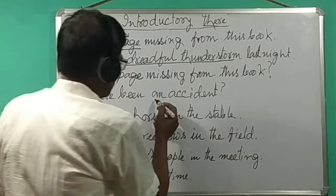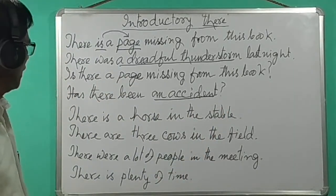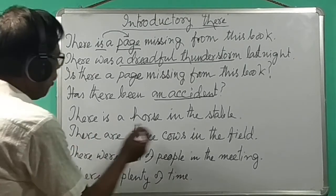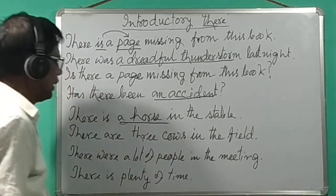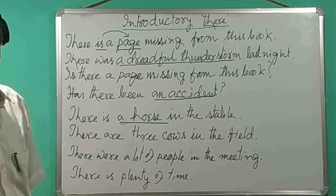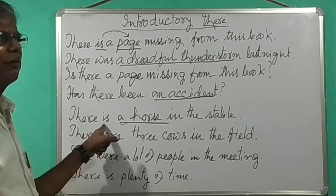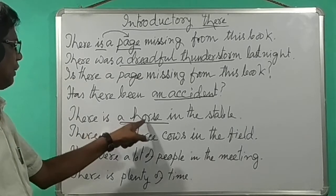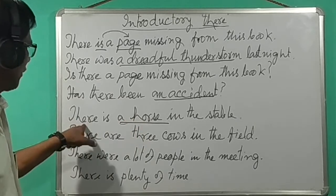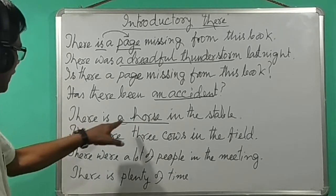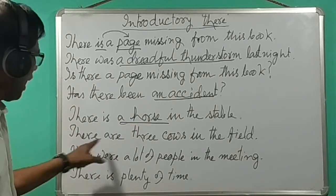This is the real subject — the real subject. For example: 'There is a horse in the stable.' The verb is third person singular 'is' because the subject 'a horse' is singular. The verb agrees with the real subject, not with 'there'.